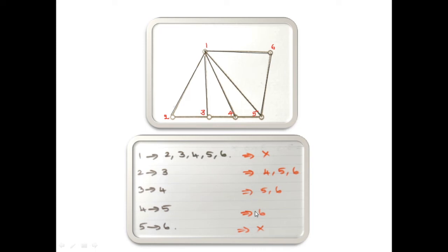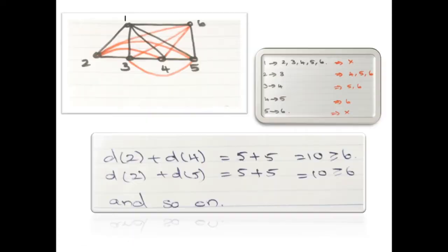Now you can write the closure of the graph. See the closure of the graph — the previous graph whose closure is drawn in red color. You can see one is adjacent to two, three, four, and five, and there is no non-adjacent there. So from vertex one, no red lines are added.